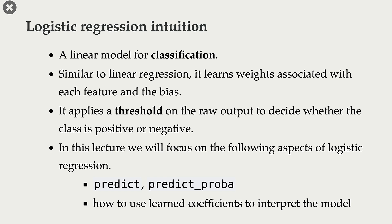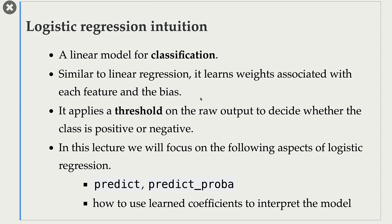The idea is that, similar to linear regression, we calculate this prediction score using learned coefficients and the bias term, and we apply a threshold on it. At this point, we are going to focus on how predict and predict_proba work for logistic regression, and how we can use learned coefficients to interpret the model. We are not really going to talk about how it learns these coefficients and the bias term.